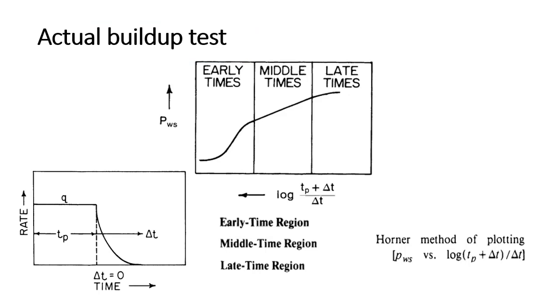In actual pressure buildup test, this Horner's plot has three distinct regions that need to be defined. The first region is the early time region, the middle region is the middle time region, and the last is the late time region.